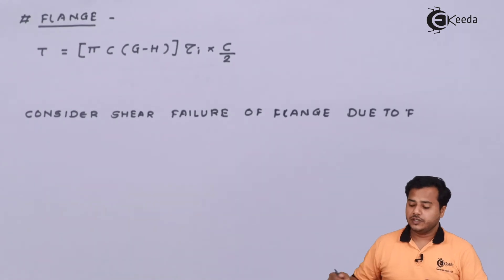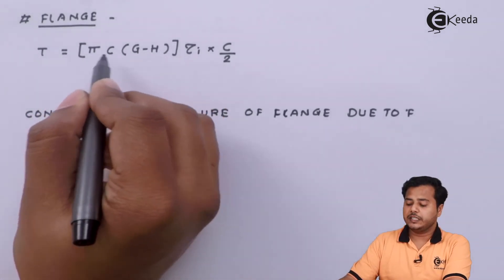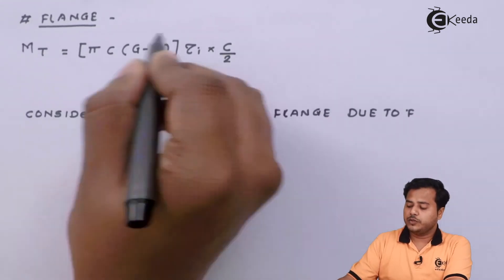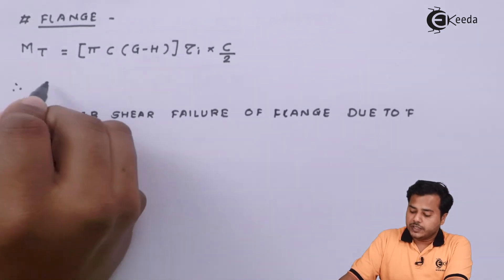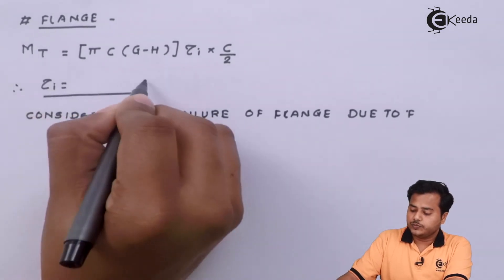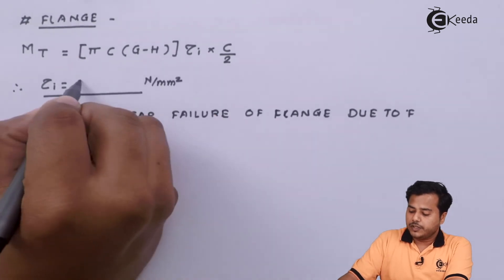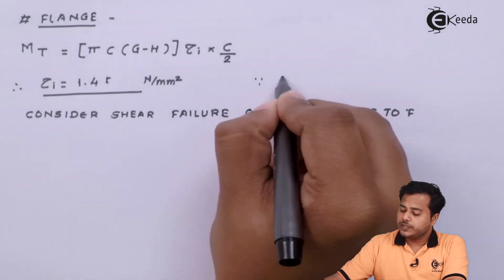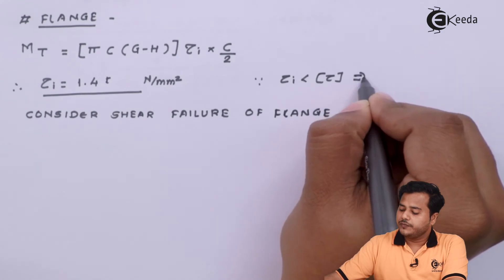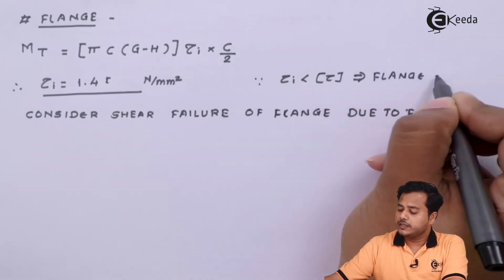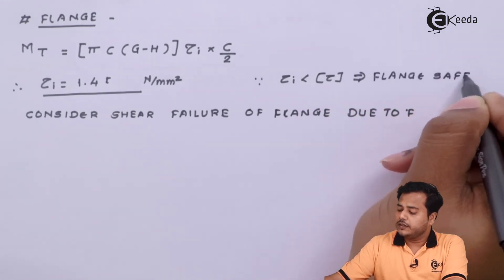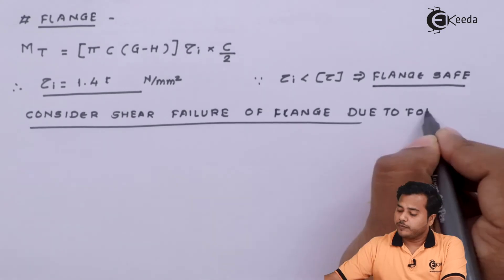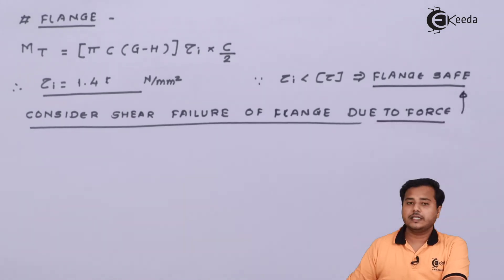Let us move ahead to the flange. Using the standard formula in terms of alphabetical notation, substituting back the equation values, we get τ_induced ≈ 1.4 N/mm². Comparing this with the allowable value, considering the shear failure of the flange due to the applied force, we find that the flange is safe.